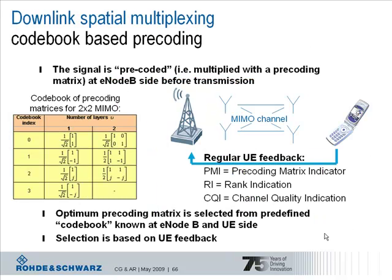Now let's have a look at the downlink spatial multiplexing operation in LTE which uses codebook based precoding. The codebook for the 2x2 MIMO case is shown here on the left hand side — this table taken from the specification. The table effectively contains entries of precoding vectors and matrices which are multiplied with the signal in the precoding stage of the base station. The selection of which of these matrices or vectors to use, which codebook entry to select, is taken in the base station based on the regularly received UE feedback.